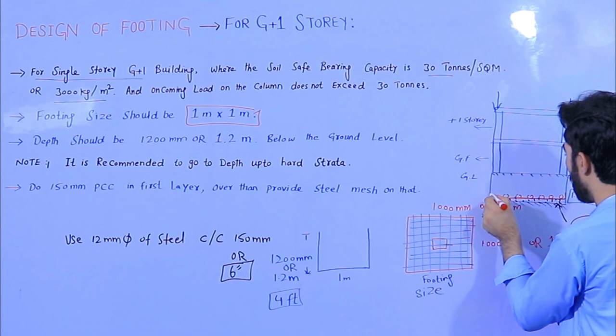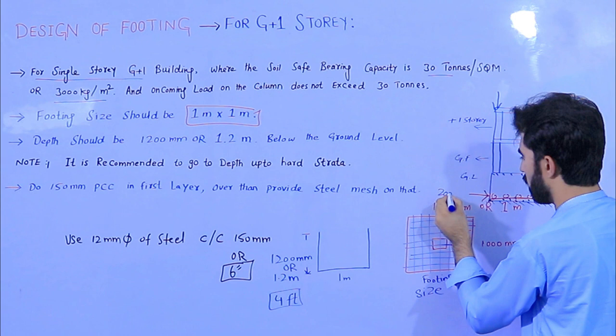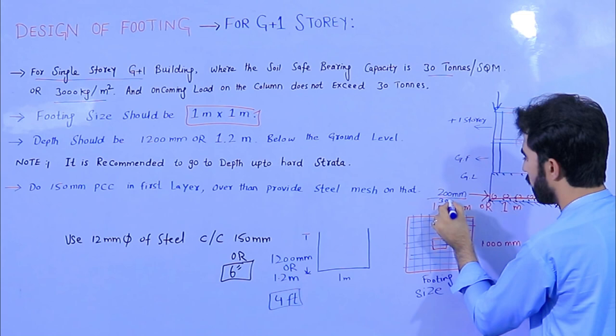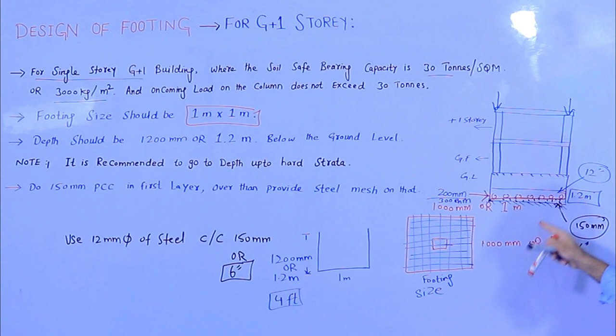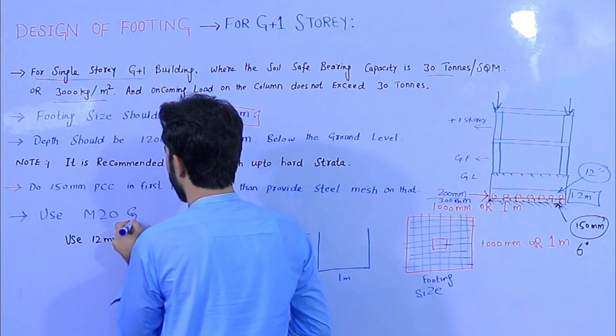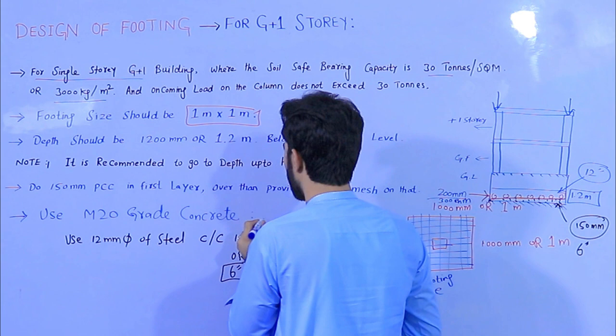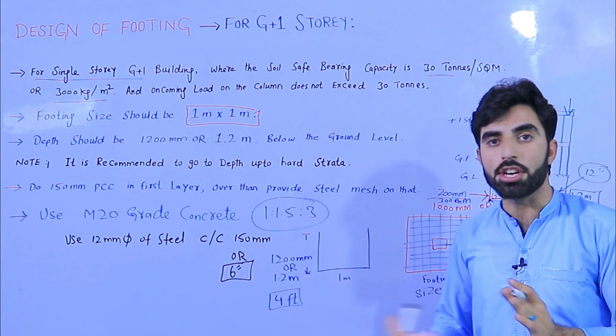The footing depth should be a minimum of 200 millimeters, but I recommend you try to do 300 millimeters or 12 inches. Then you can provide more concrete. Also, use M20 grade concrete for G plus one story, which has a ratio of 1:1.5:3 — one part cement, 1.5 parts sand, and three parts aggregate or crush.